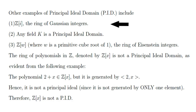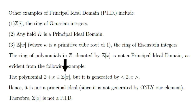Here are a few more examples of principal ideal domains. The ring of polynomials over integers is not a principal ideal domain. For example, the polynomial 2 plus x is a polynomial over integers, but it's not generated by only a single element. In fact, it's generated by the two elements 2 and x, and so it's not a principal ideal. Hence, the ring of polynomials over integers is not a principal ideal domain.